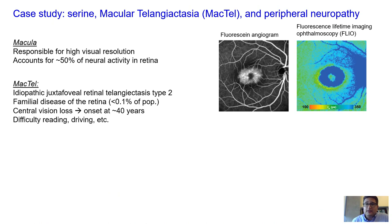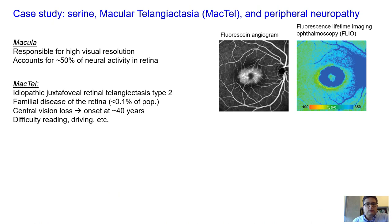The disease macular telangiectasia, MacTel, is a disease of the macula — the part of the eye responsible for high visual acuity and most of the neurological activity. It's called telangiectasia because of the vascular abnormalities observed by fluorescein angiogram, but we now know it's much more specific than a vascular defect.